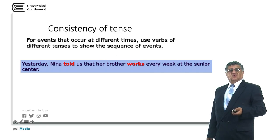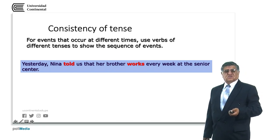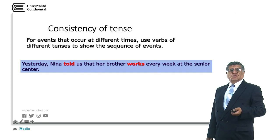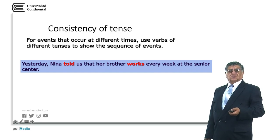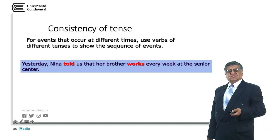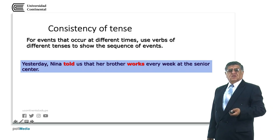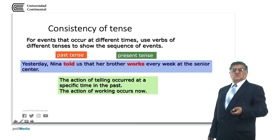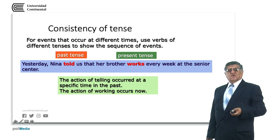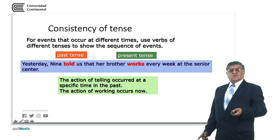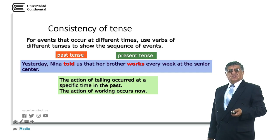We need to show the sequence of events when necessary. For example: yesterday, Nina told us that her brother works every week at the senior center. This sentence expresses that Nina told us in the past, and her brother works in the present — we are giving information following a line of time. The telling occurred before we understood that her brother works there.